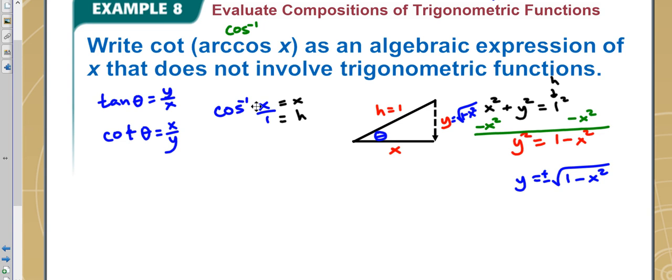So our answer here that this would spit out is x over y. What's my x? Well it is x. What's my y value? Well, we just found it as the square root of 1 minus y squared.